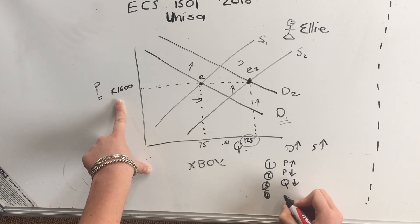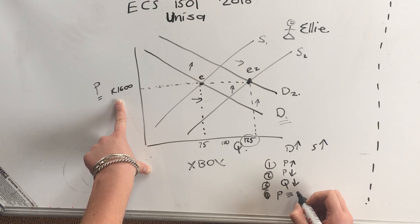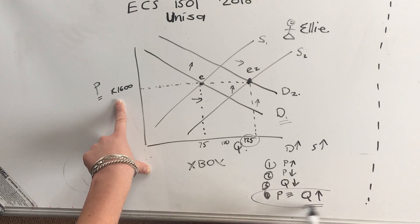And then here they'll have one that'll say probably the price will remain the same but what will definitely happen is the quantity will go up and then we choose that one that says the quantity will go up.